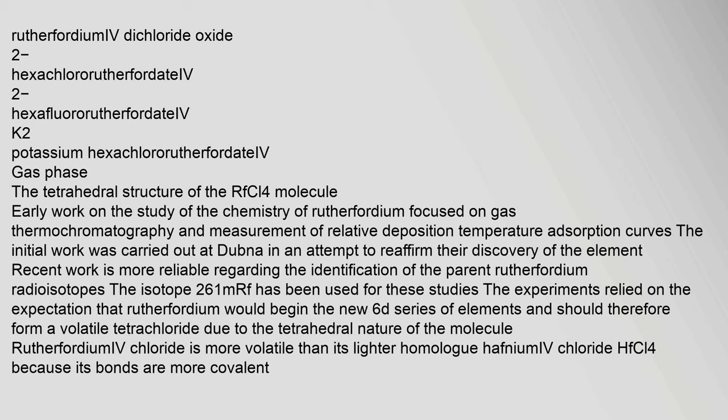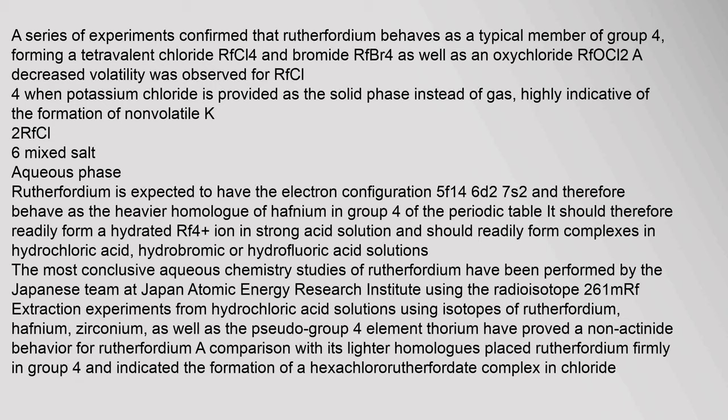Early work on the study of the chemistry of rutherfordium focused on gas thermochromatography and measurement of relative deposition temperature adsorption curves. The initial work was carried out at Dubna in an attempt to reaffirm their discovery of the element. The isotope 261mRf has been used for these studies. The experiments relied on the expectation that rutherfordium would begin the new 6d series of elements and should therefore form a volatile tetrachloride. Rutherfordium tetrachloride is more volatile than its lighter homolog hafnium tetrachloride (HfCl₄) because its bonds are more covalent. A series of experiments confirmed that rutherfordium behaves as a typical member of group 4, forming a tetravalent chloride RfCl₄ and bromide RfBr₄, as well as an oxychloride RfOCl₂.